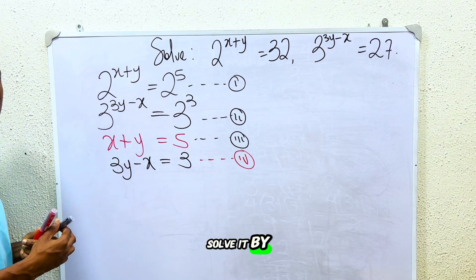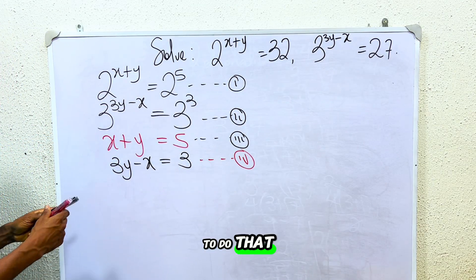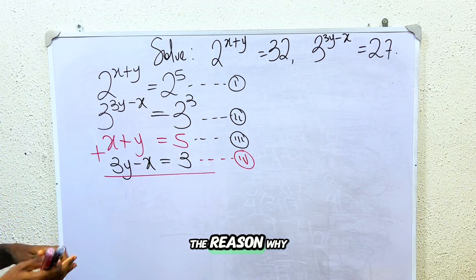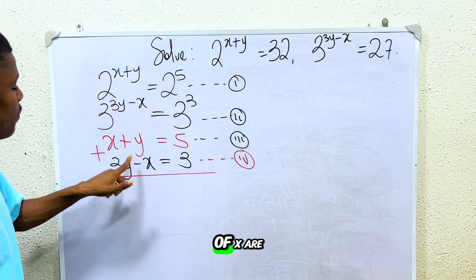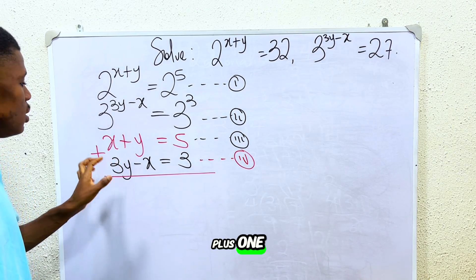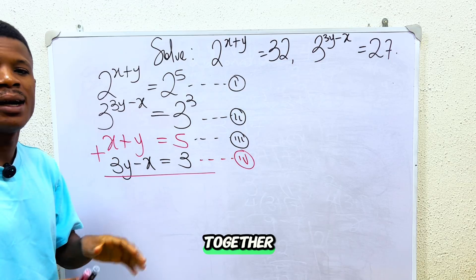So what do I have to do? I will solve it by elimination method. To do that, I have to add equation 1 and equation 2. The reason why I'm adding is that the coefficients of x are the same, just that this one is negative 1 and this one is just plus 1. So when I add the two together, x will be eliminated.